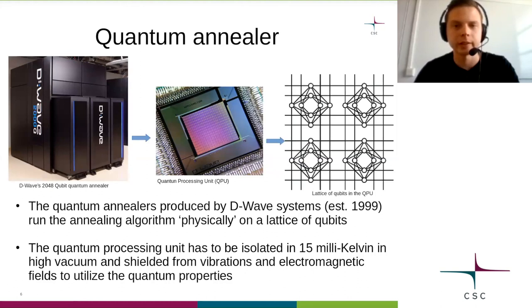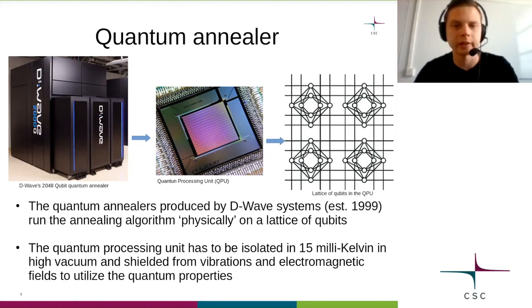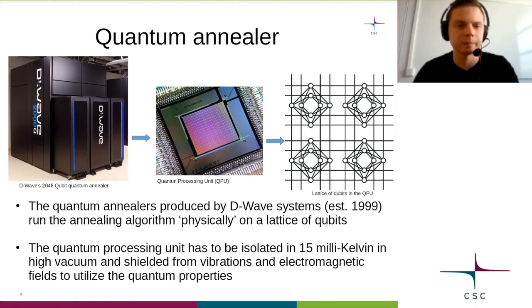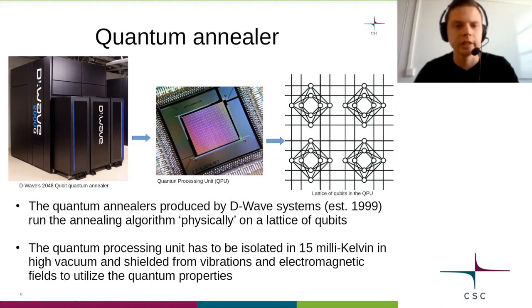There is a Canadian quantum computing company, D-Wave Systems, that has chosen to do quantum annealing, which makes it different from the other quantum computing companies. D-Wave realizes the quantum annealing on a lattice of physical qubits, whose total energy as a function of the qubit configuration is made to correspond to the landscape of the problem being optimized. The main part of the quantum annealer is the quantum processing unit. In the current version, the D-Wave 2000Q, the quantum processor holds 2048 qubits. To maintain the delicate quantum properties of the processing unit, it has to be isolated at 15 mK in a high vacuum and protected from physical vibrations and electromagnetic fields, which is why the whole system looks like a big black box.